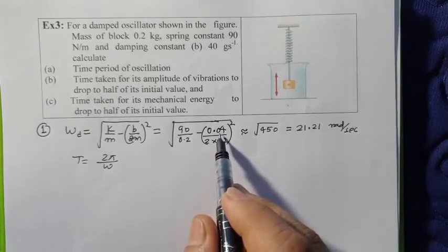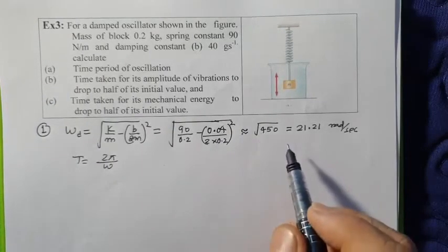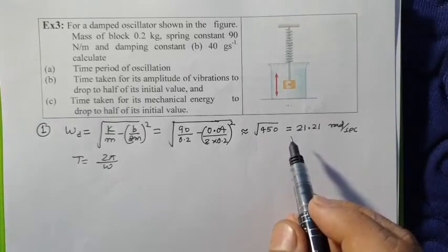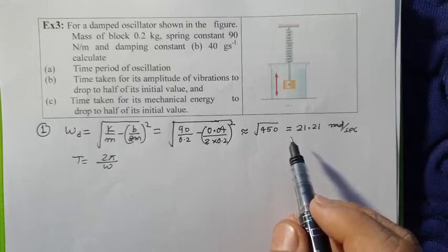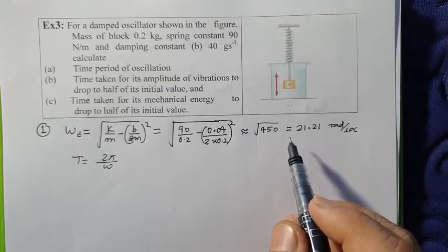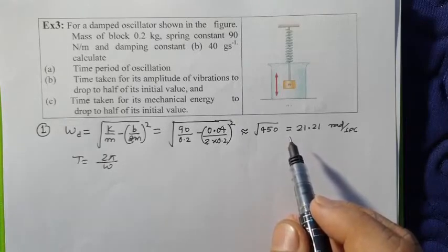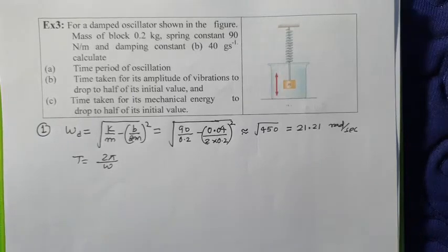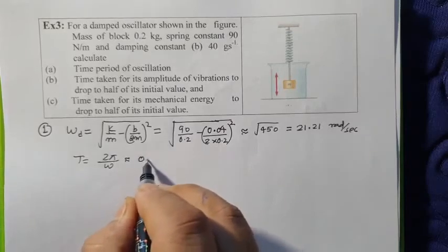You can see that the damping is very little. You can understand that the frequency is almost natural frequency. This means that the damping will have a lot of time to die out of the system, oscillation to die out of the system, but the frequency of oscillation is almost natural frequency. When you calculate the time period, that will be coming around 0.3 seconds.